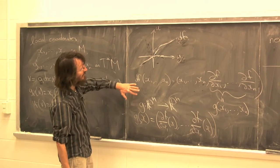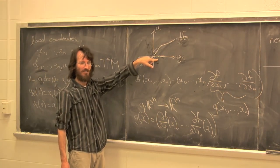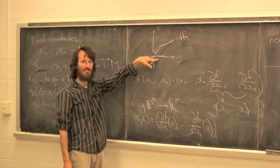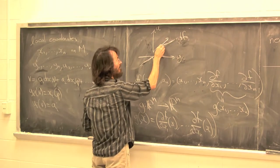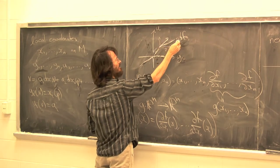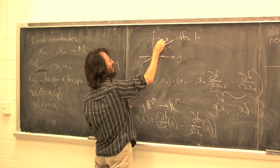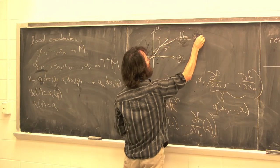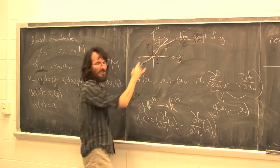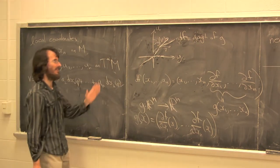A tangent vector to the graph of a function of several variables: if this is a graph of g, then a tangent vector is given by a vector v in the base direction plus Dg applied to v. So you get the horizontal direction plus the derivative applied to it. That means you can get all the vertical vectors this way, which confirms the surjectivity argument.